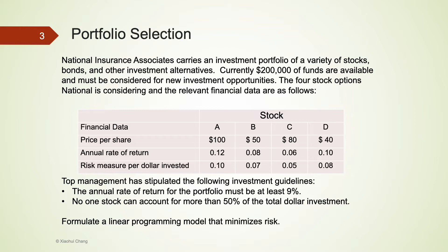Portfolio selection problems involve situations in which a financial manager must select specific investments, such as stocks and options, from a variety of investment alternatives. The objective function for portfolio selection problems is usually maximization of expected return or minimization of risks. The constraints usually take the form of restrictions on the type of permissible investments, state laws, company policies, maximum permissible risks, and so on.